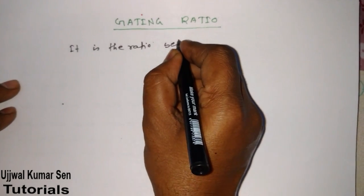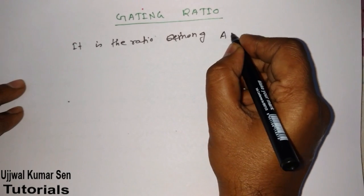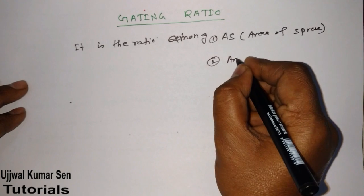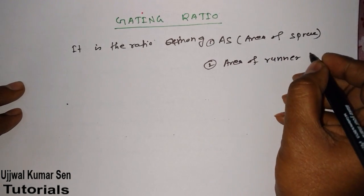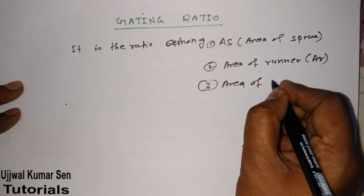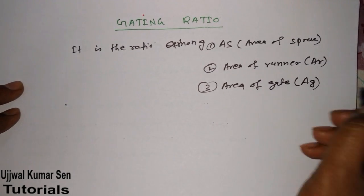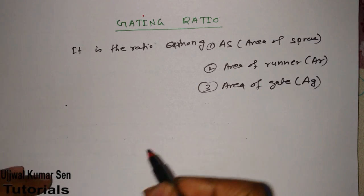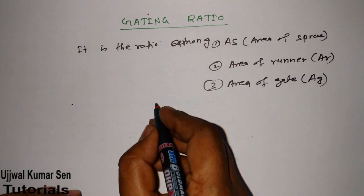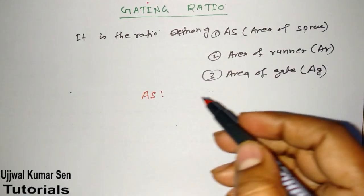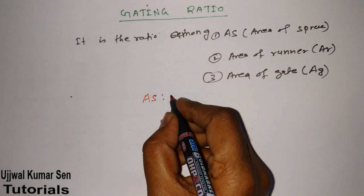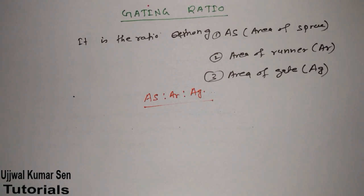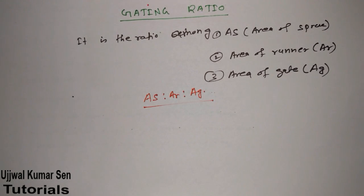It is the ratio among: first, the area of sprue (As); second, the area of runner (Ar); and third, the area of gate (Ag). So there are three things, and the gating ratio is As : Ar : Ag — the ratio among area of sprue, area of runner, and area of gate.